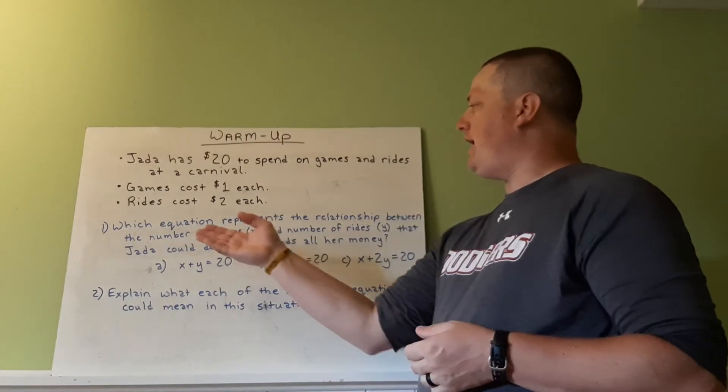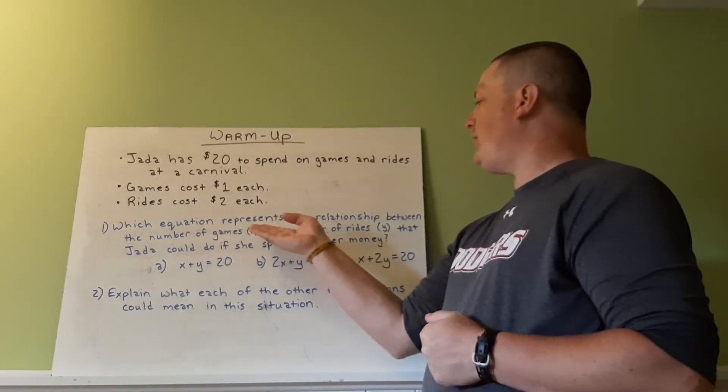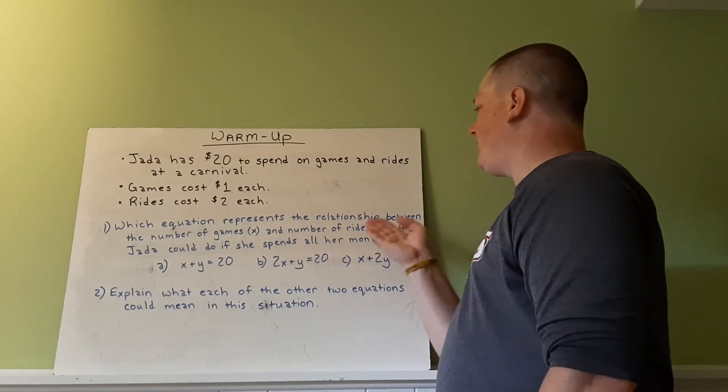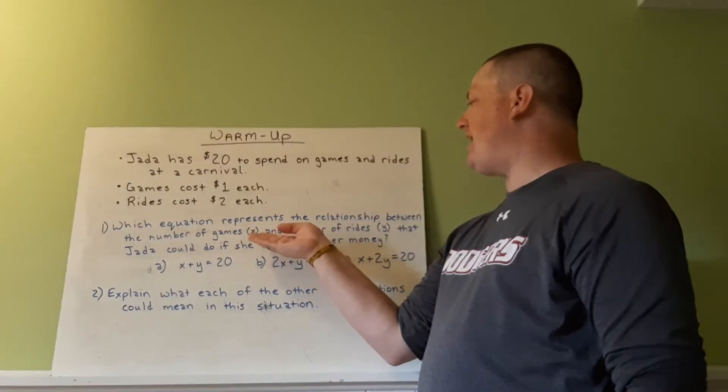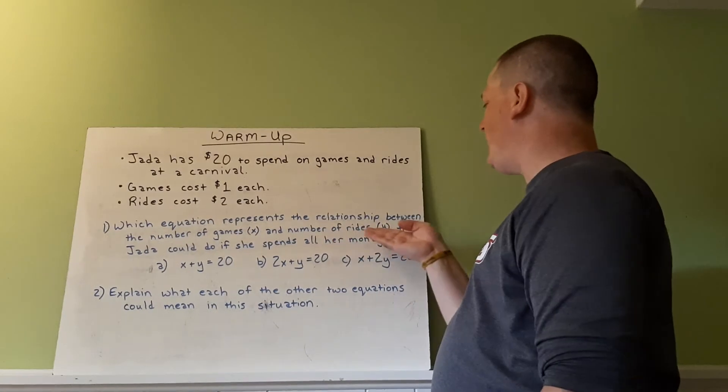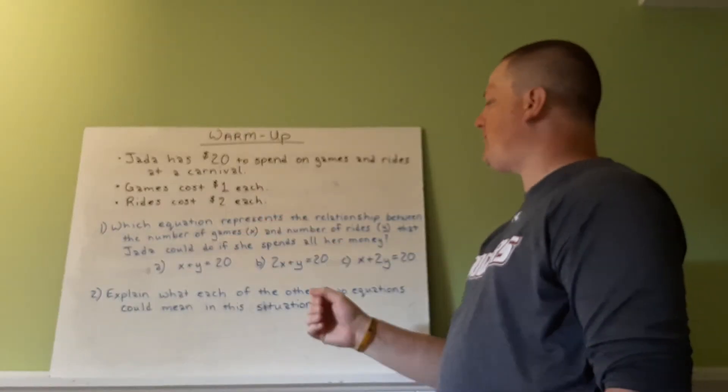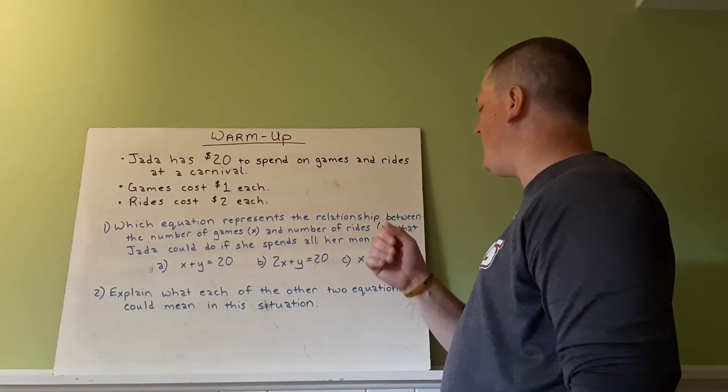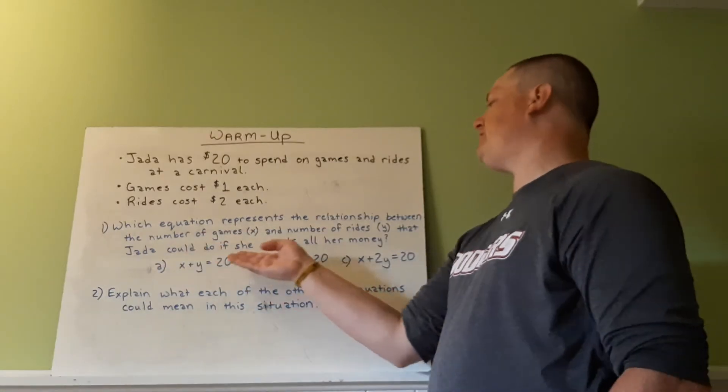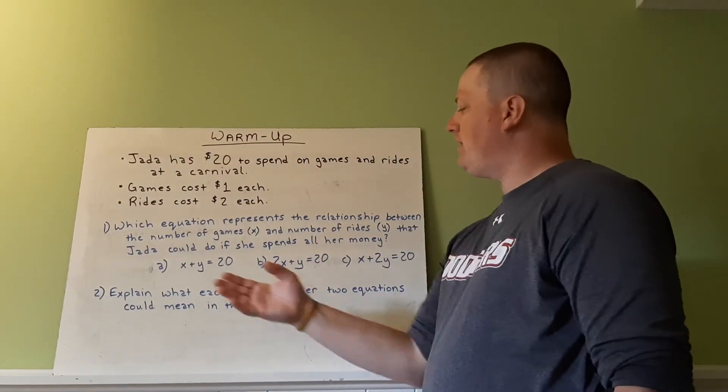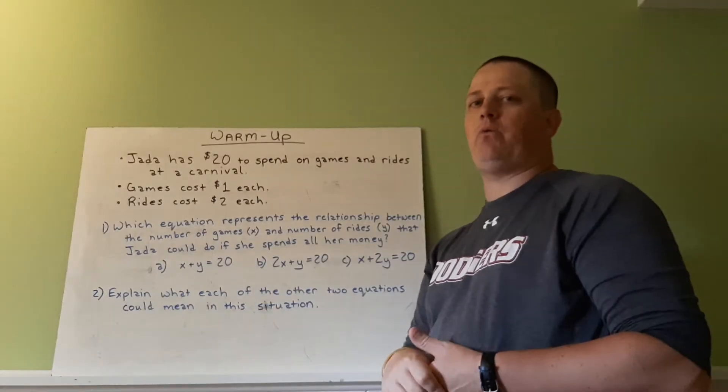What you need to do is determine which equation represents the relationship between the number of games X and the number of rides Y. So the games are represented by X, the rides are represented by Y, that Jada could do if she spends all her money. So there's three options here.